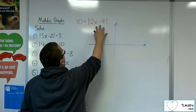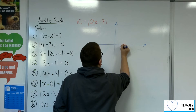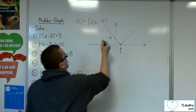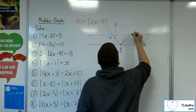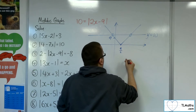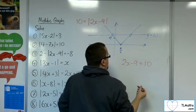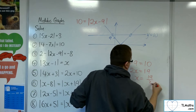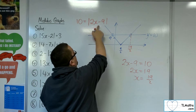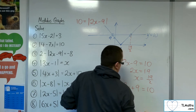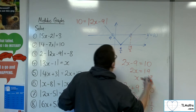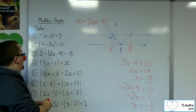Drawing the graph: 2x minus 9 will be 0 at 9 halves, so we'll have a V-shape going through 9 on the y-axis, and y equals 10. We've got two points of intersection. This line is y equals 2x minus 9; setting that equal to 10, adding 9 to both sides and dividing by 2 gives x equals 19 halves. The line with negative gradient is minus 2x plus 9 equals 10; taking 9 from both sides and dividing by minus 2 gives x equals minus 1 half.